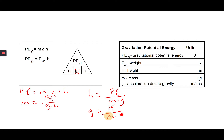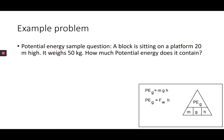These are just different ways to use that little triangle to derive an equation. Now a sample problem: a block is sitting on a platform 20 meters high, it weighs 50 kilograms — how much potential energy does it contain? I write out what I know in my 'parking lot.' I don't know the potential energy. The mass is 50 kilograms, gravity on Earth is 9.8 meters per second squared, and height is 20 meters.